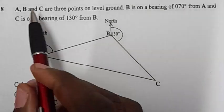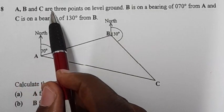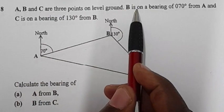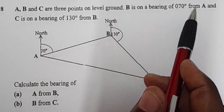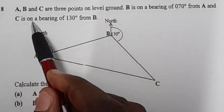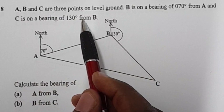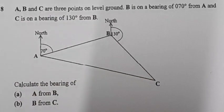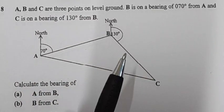Here is a bearing question. A, B and C are three points on level ground. B is on a bearing of 070 degrees from A, and C is on a bearing of 130 degrees from B. Before we go ahead and answer this question, one thing you have to know is that language in bearing is very important.